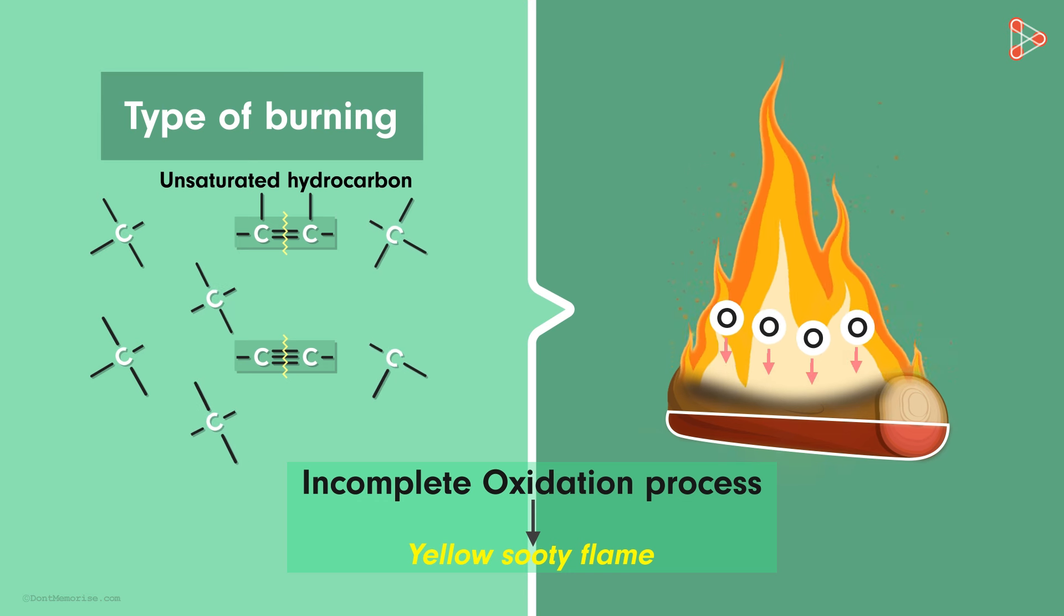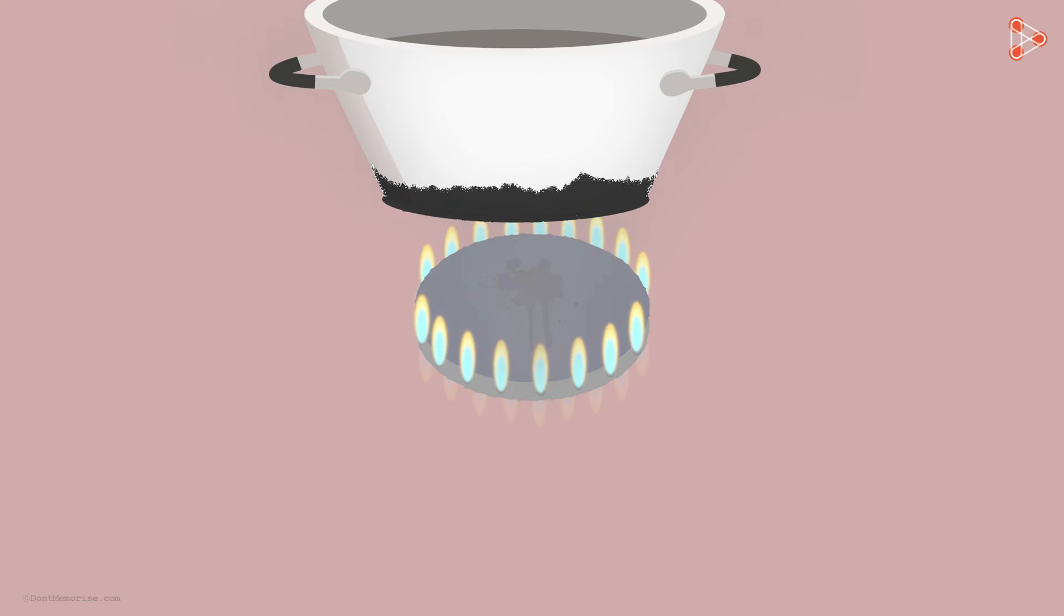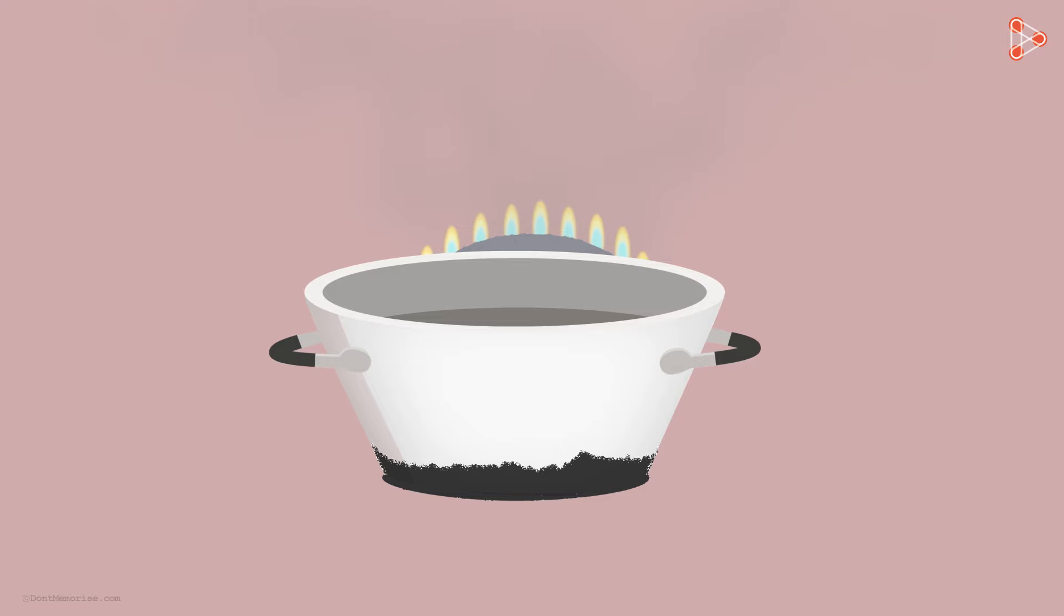Let me give you another example. Have you ever noticed the gas burners in kitchens? They usually burn with a clean blue flame. But as the burners get older, the gas starts burning with a yellow flame. Not only this, it also gives out thick black soot which spoils the bottom of the vessel. Have you ever wondered why this happens?